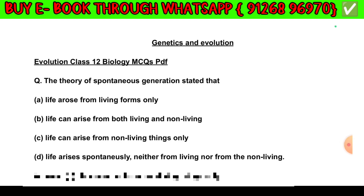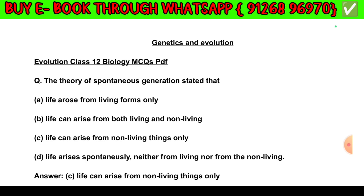Question number 1. The theory of spontaneous generation states that: Option A — Life arose from living forms only. Option B — Life can arise from both living and non-living. Option C — Life can arise from non-living things only. Option D — Life arises spontaneously, neither from living nor from the non-living. The answer is Option C: Life can arise from non-living things only.